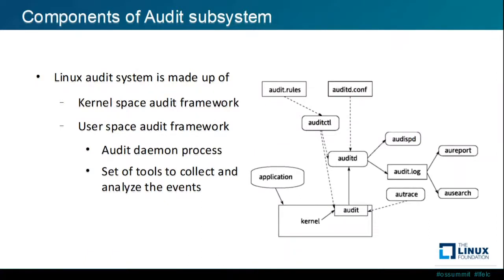The audit subsystem is made up of the kernel space audit framework and the user space audit framework. The kernel space framework generates events based on configured rules, and those events are transferred to the user space components. The main user space component is the audit daemon process, which communicates with the kernel part of the audit subsystem. There are also a set of tools used to collect and analyze the event records.